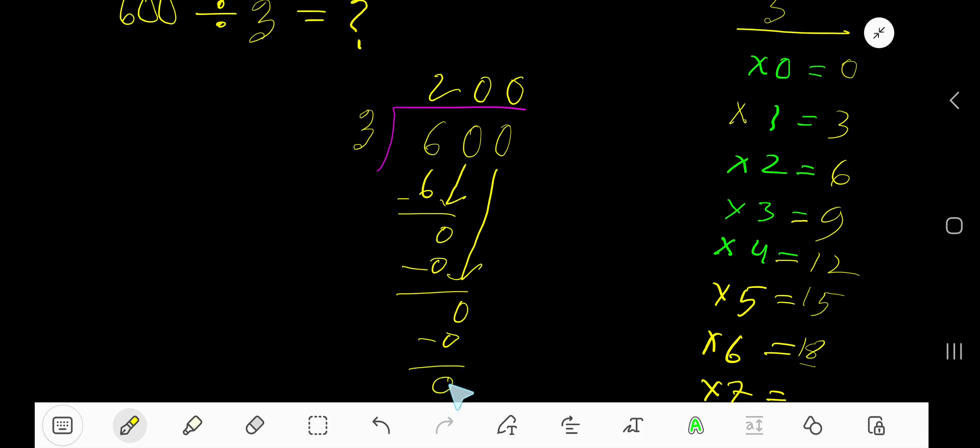Since your remainder is 0 and nothing you have here, so we are done. So 200 is our answer.